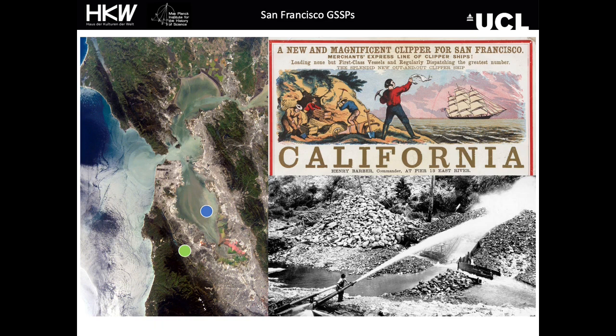Moving on, we have two sites from the San Francisco Bay area on the western coast of the USA. The bay itself contains a lot of mud, not least due to the efforts of mining during the California gold rush in the mid-19th century, but also due to soil erosion and more recent land use changes such as wetland reclamation. So we have two potential GSSP cores: one collected from the shallow estuary of the south bay, and a core from Searsville reservoir built in 1891 to the south of San Francisco in Stanford.